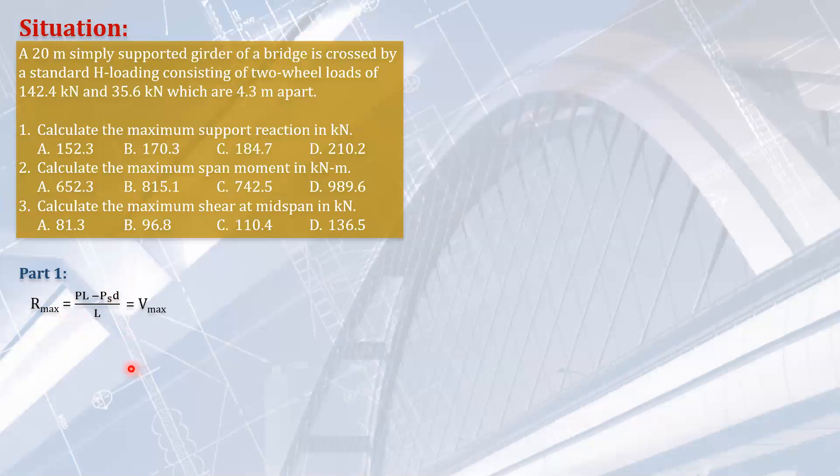Your P is the total load, P1 plus P2, the smaller and the heavier load. And then your Ps is the smaller of the two. In this case, the 35.6 kilonewtons. And of course, the D here is the distance between the loads, which is 4.3 meters. So if you know the formula, then you can do it direct substitution. So the answer is 170.35 kN. Again, if you had a hard time memorizing that, you can easily put this heavier load over the support. The other one is inside, then solve the reaction on that support. That's already the maximum shear.